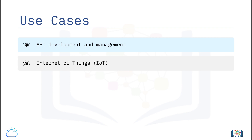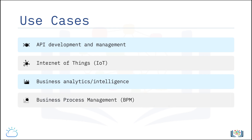Internet of Things, or IoT: PaaS clouds support a broad range of application environments, programming languages, and tools used for IoT deployments. Business analytics or intelligence: PaaS tools allow organizations to analyze their data to find business insights that enable more informed business decisions and predictions. Business Process Management, or BPM: organizations are using the PaaS cloud to access BPM platform delivered as a service. Master Data Management, or MDM: organizations are leveraging the PaaS cloud to provide a single point of reference for critical business data, such as information about customer transactions and analytical data to support decision making.